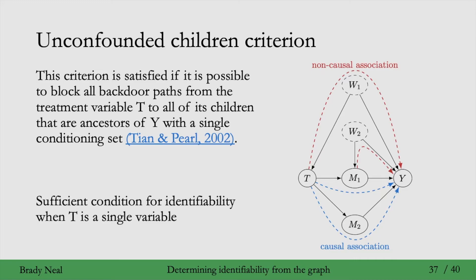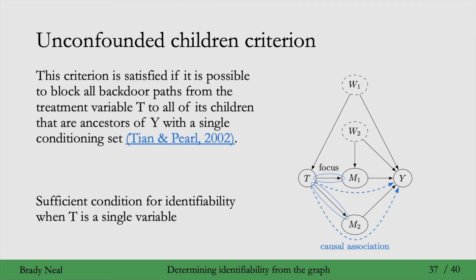The intuition for why the unconfounded children criterion gives us identifiability is that we can isolate the causal association flowing out of t by focusing on the edges from t to its children. We can isolate this causal association if the relationship of t and its children that are ancestors of y is unconfounded - if it's possible to block all backdoor paths from t to all of its children using just a single conditioning set. Focusing on the causal association flowing from t into its children that are ancestors of y allows us to remove non-causal association, giving us identifiability.